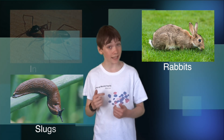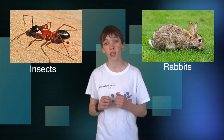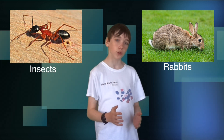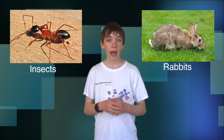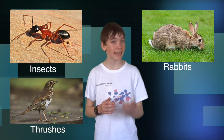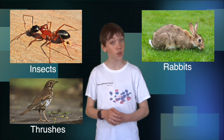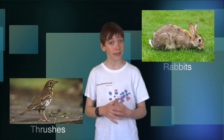But what would happen if one of the species in the food web started to decline? For example, rabbits, slugs and insects all eat grass. If there were fewer slugs there would be more grass for the insects and rabbits. With more food the population of rabbits and insects would increase. However, the thrushes which prey on the insects and slugs would have to eat more insects to compensate for the fewer slugs in their diet. This would reduce the population of insects.